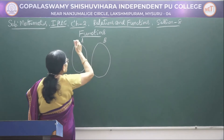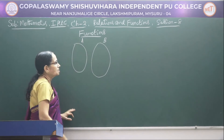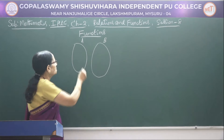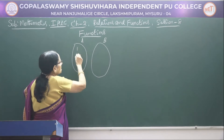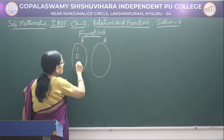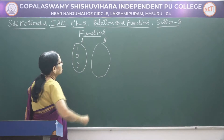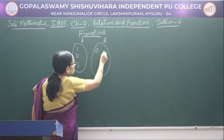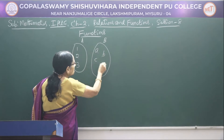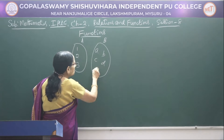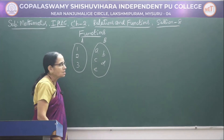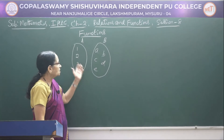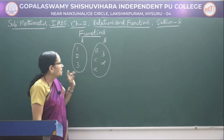Consider two sets here, say A and B. Both of them are non-empty sets. Let me take the elements of A to be 1, 2, 3, and here it may be A, B, C, D, E — there are five elements. These are numbers and those are alphabets.